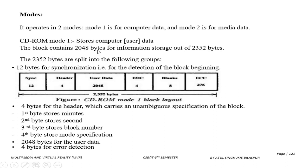The block content has 2048 bytes of information out of 2352 bytes. The 2352 bytes are split into the following groups: 12 bytes for synchronization, 4 bytes for the header, 2048 bytes for user data (as we have seen), 4 bytes for error detection (EDC), 8 bytes blank, and 276 bytes for error correction.